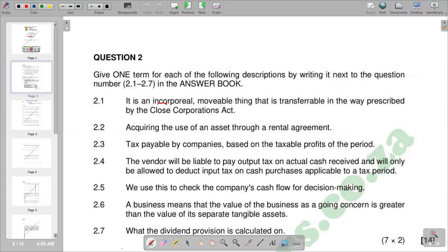2.2: Acquiring the use of an asset through a rental agreement. We know that this is leasing. Basically a lease is a contractual arrangement calling for the user to pay the owner for the use of an asset. When we have the user getting into an agreement to pay the owner of an asset for the use of that asset, we call it a lease. The process is called leasing.